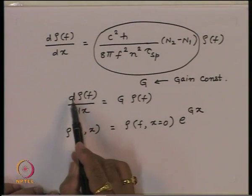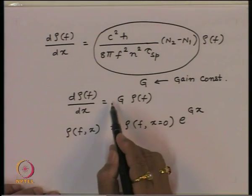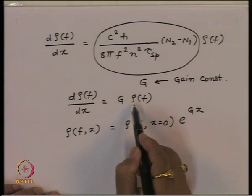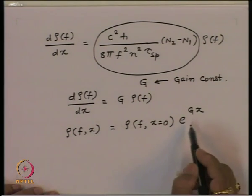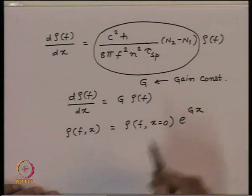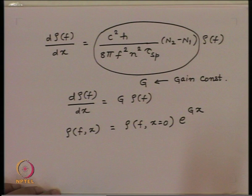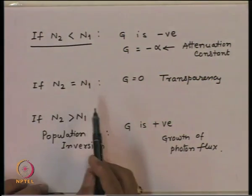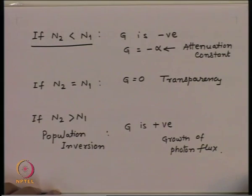The differential equation for the photon flux as a function of distance can be written as some constant G multiplied by the photon flux. This says that the photon flux grows exponentially or decays exponentially depending upon the sign of G when it travels inside the material. If N2 is less than N1, then G is negative, and the photon flux decays exponentially as it travels inside the material. This quantity can then be called the attenuation constant, so G equals minus alpha.